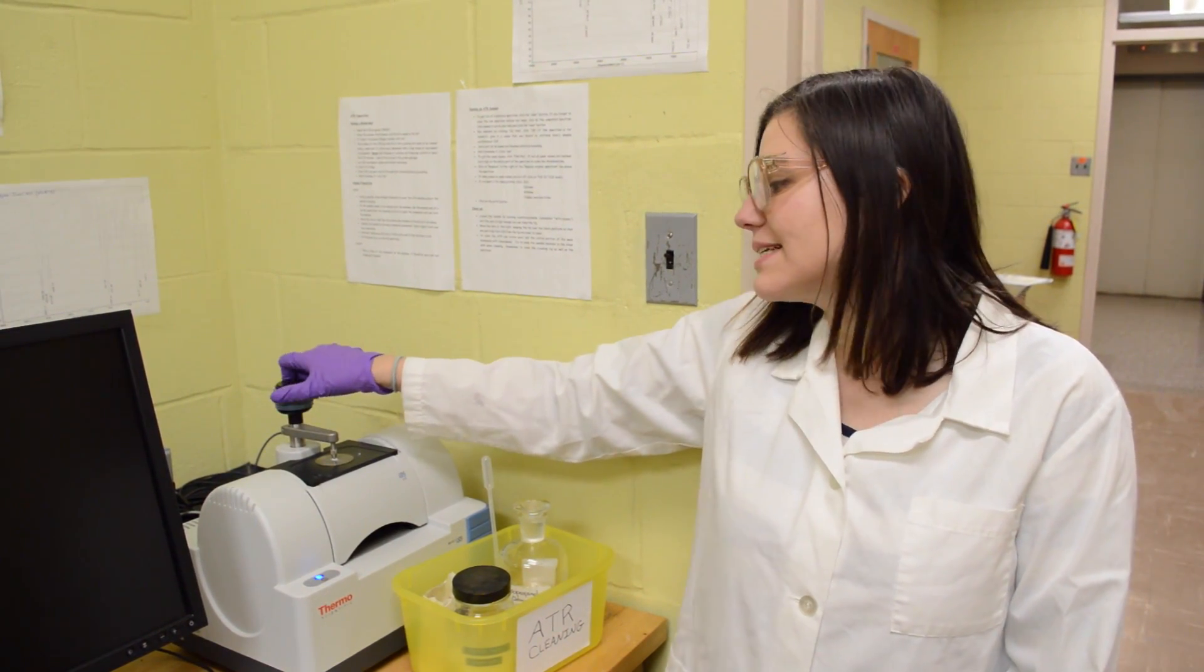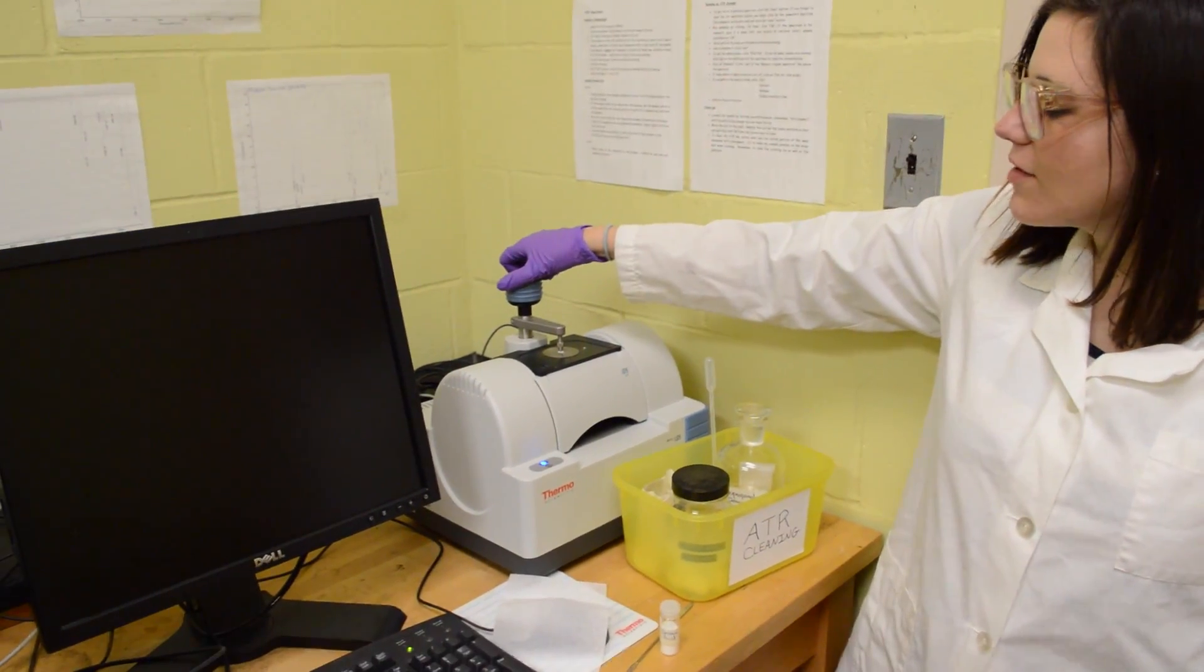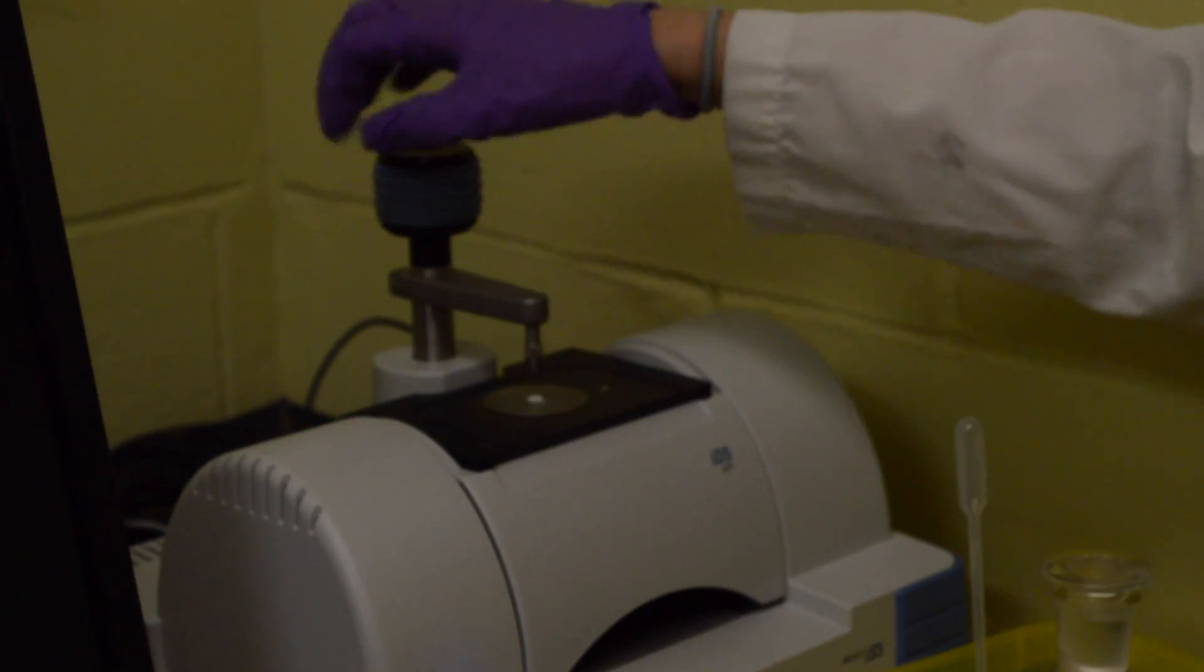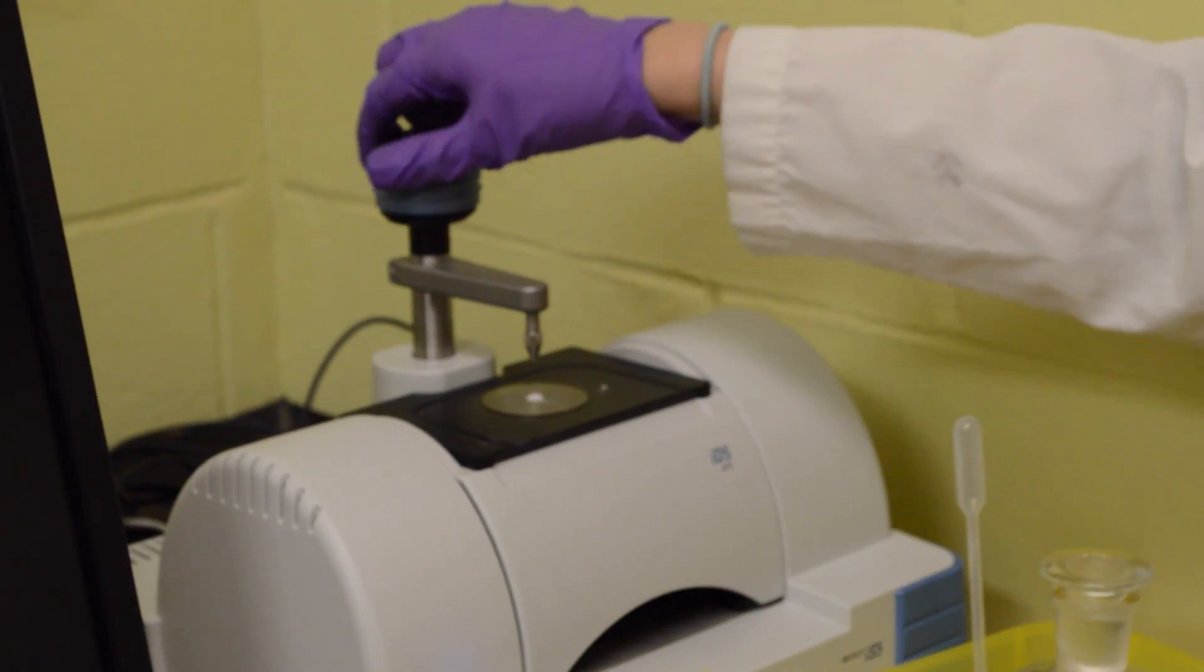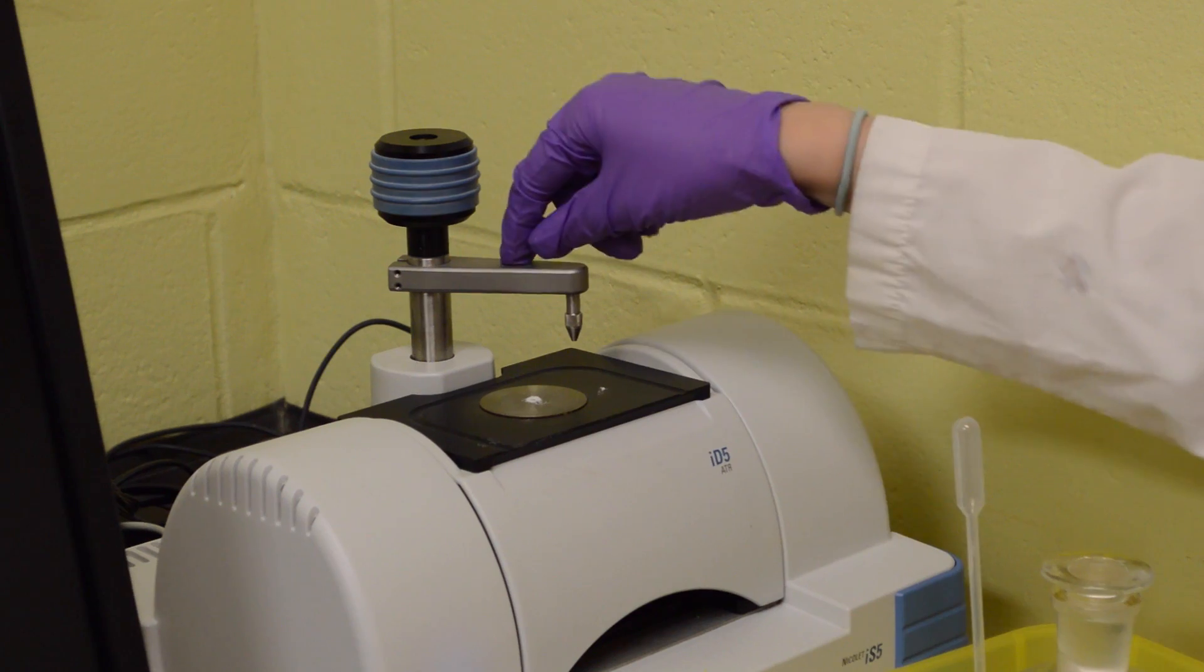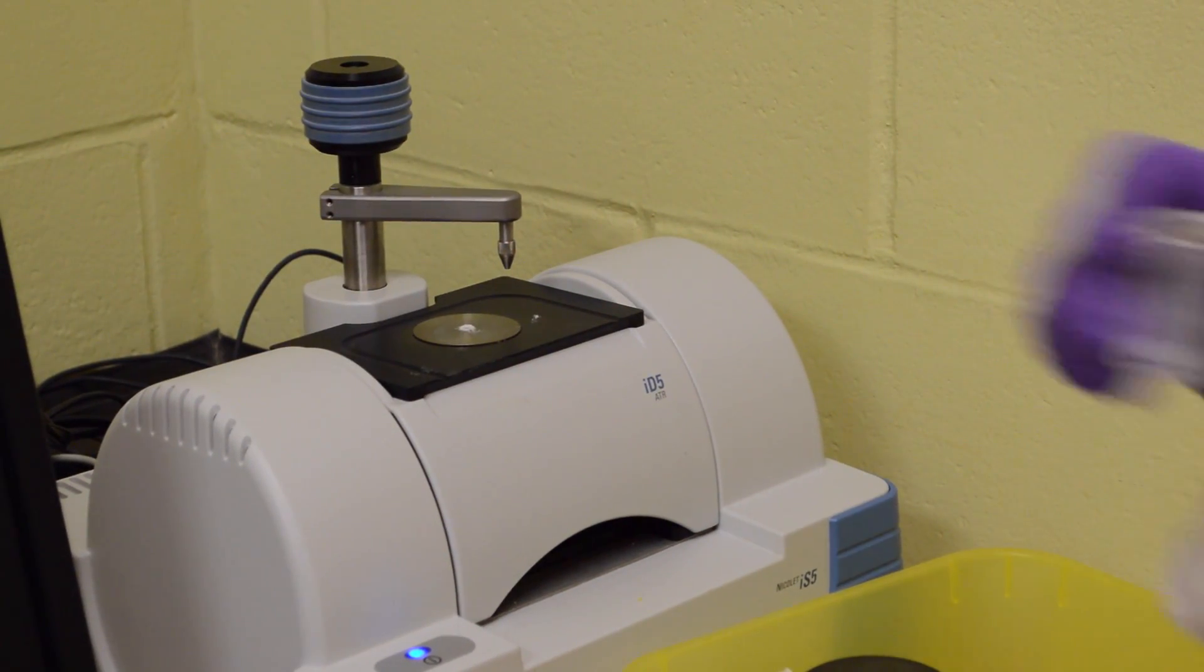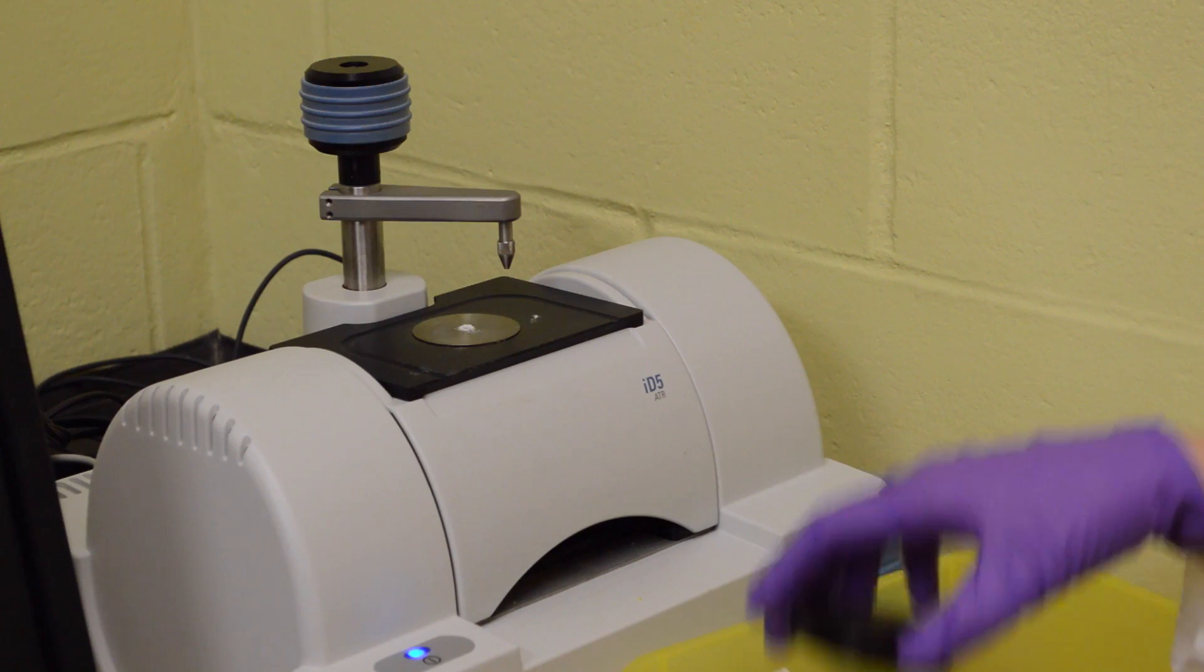Now to clean the ATR, we just want to go in reverse. We're going to turn this to the left until it's out of the way, and then move that handle over with our hands. We use isopropanol for cleaning the ATR. It's really great, it gets everything, lifts everything off.